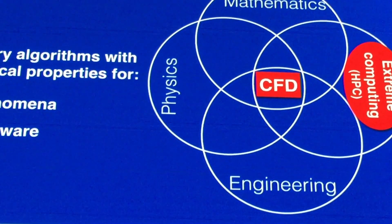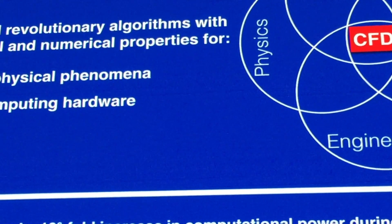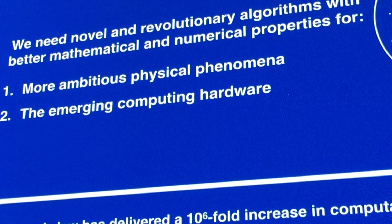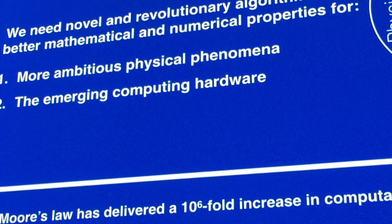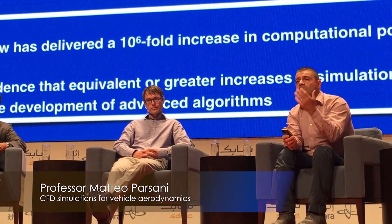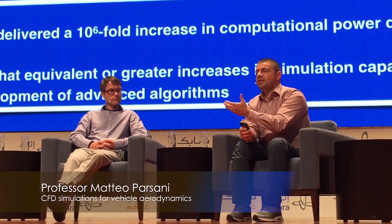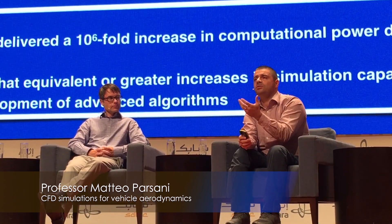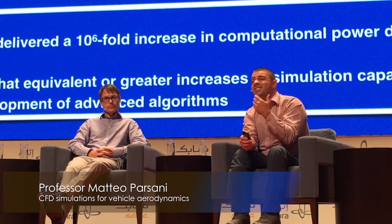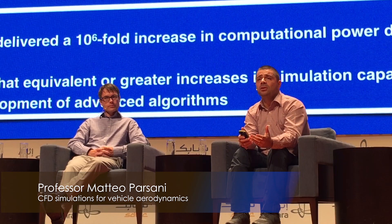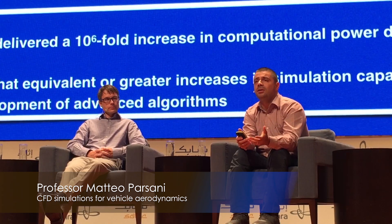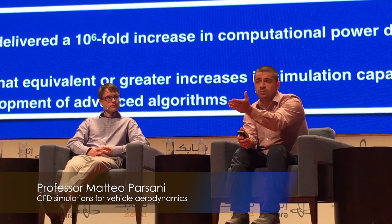If you have a problem described by some physical law — most likely by some partial differential equations — those are at the continuous level. When you want to talk with your computer, you have to discretize them first, then code them, and then the computer can understand. But the process of discretizing requires algorithms, and we cannot just use the algorithms we have nowadays. We need to come up with new algorithms with better properties if we really want to achieve what I described.